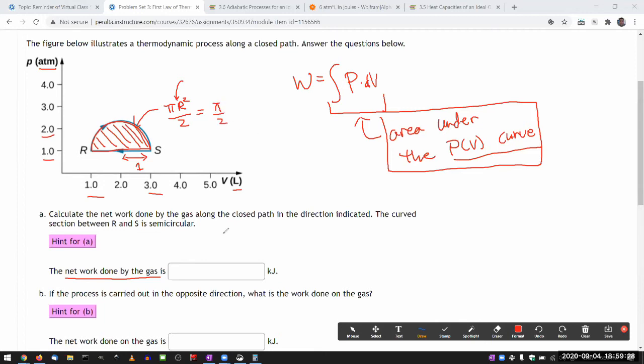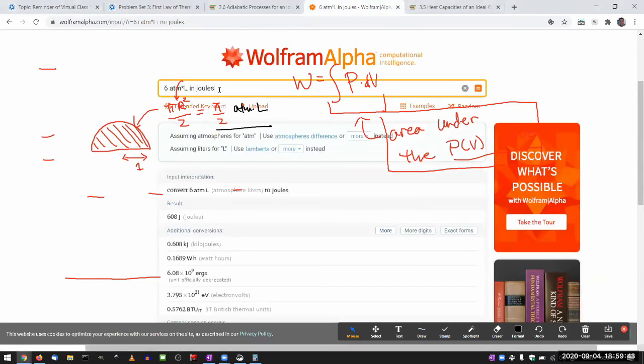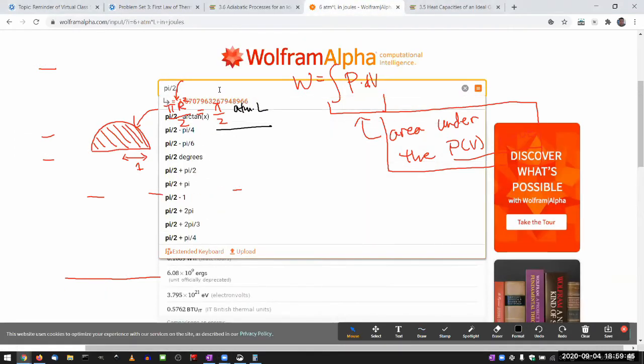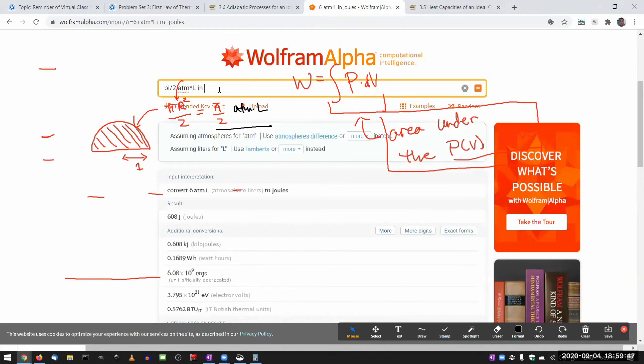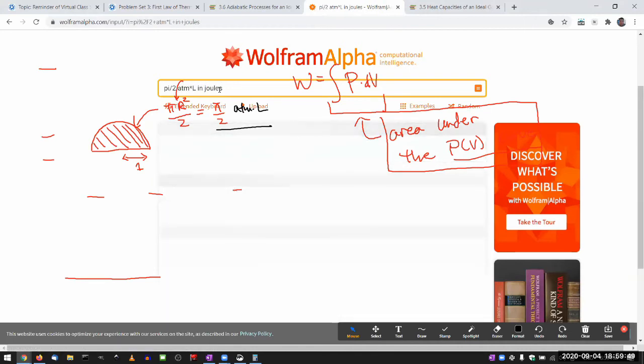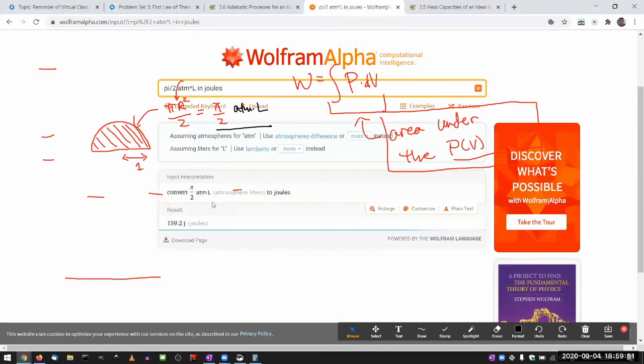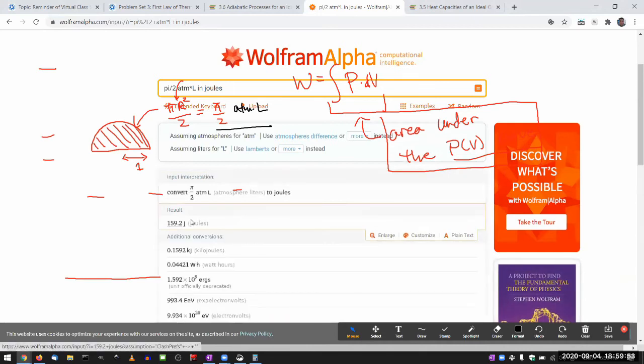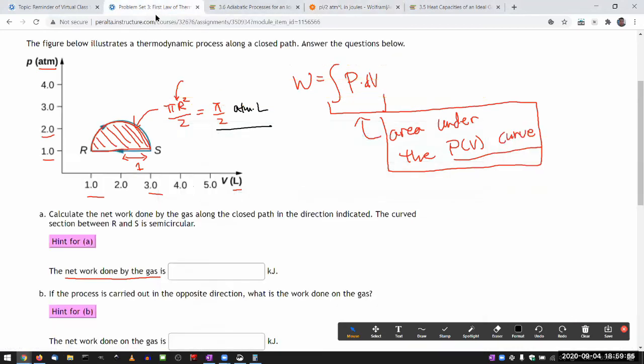Now, if you plug in pi over two here, it'll tell you it's wrong, because it's pi over two in the units of atmosphere liter. So all I have to do now is convert that atmosphere liter into joules. So let me do that here. Pi over two atmosphere liter in joules. 159 joules. So in kilojoules, it should be 0.159.